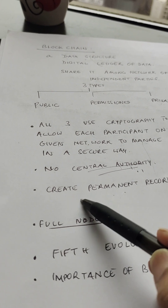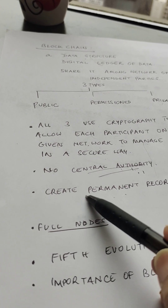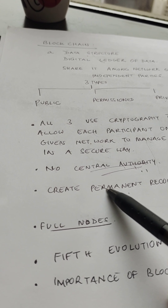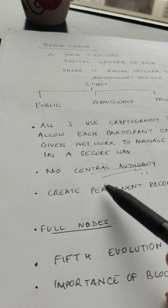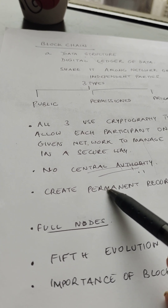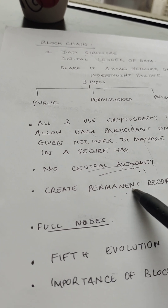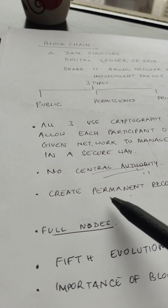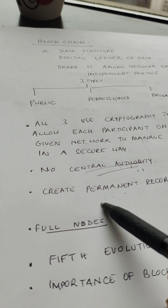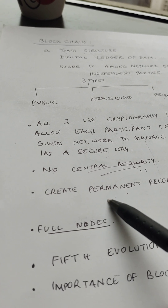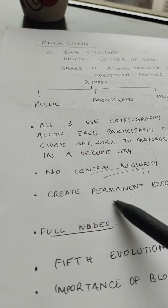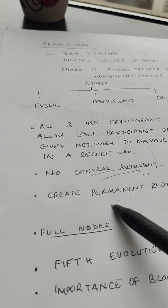Blockchains create permanent records and histories of transactions. When data is recorded in a blockchain, it is extremely difficult to change or remove it. When someone wants to add a record to a blockchain — also known as a transaction or an entry — users in the network who have validation control verify the proposed transaction.